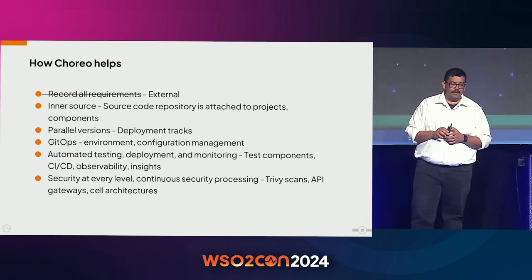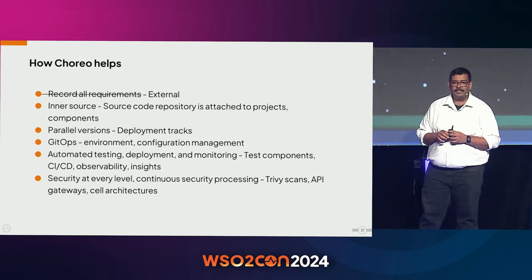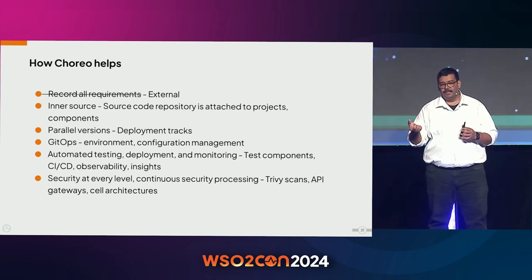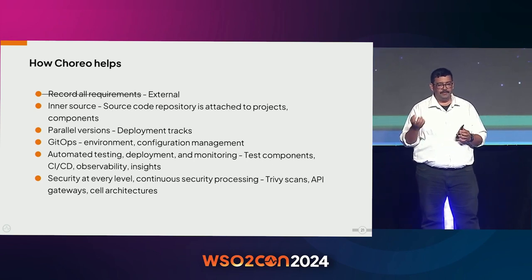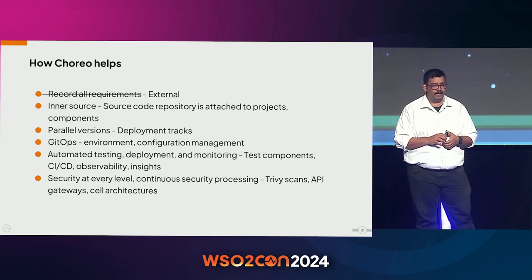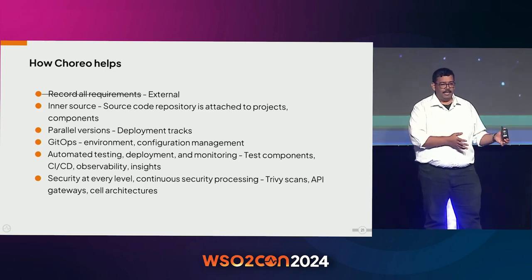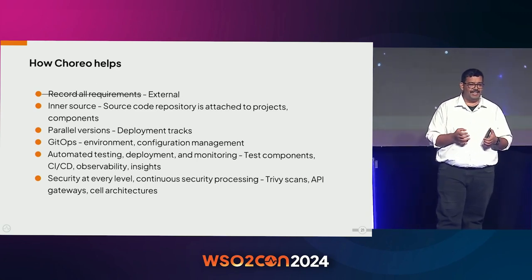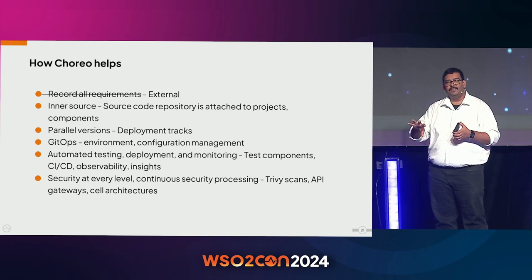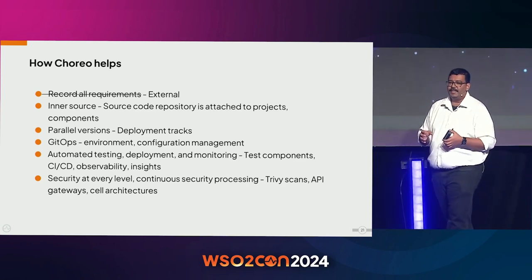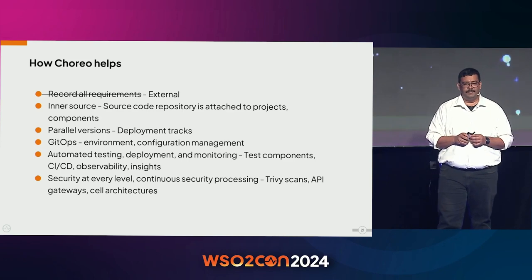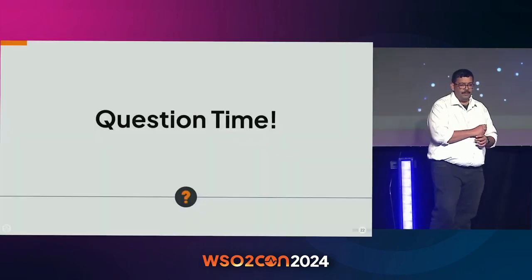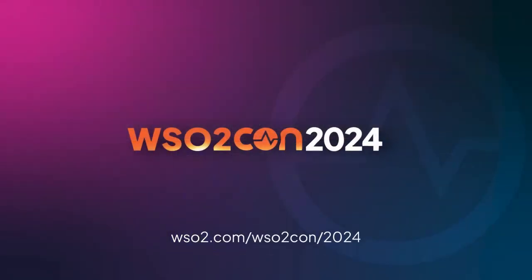For security at every level, Choreo has Trivy scans — when you build an application, the container is scanned to identify any vulnerabilities. There are also API gateways and cell architecture, which Chanaka will talk more about, helping isolate functionalities and provide security at various levels. That's all I wanted to cover. Thank you.